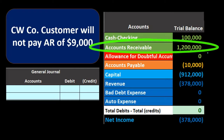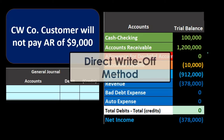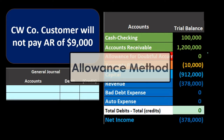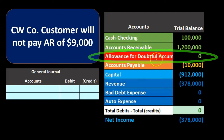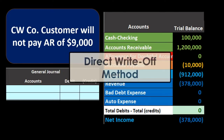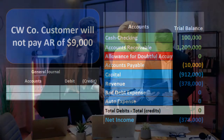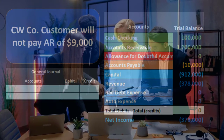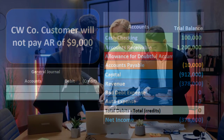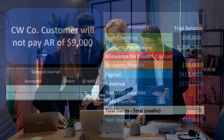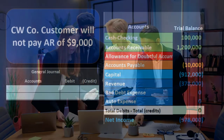As we go through the direct write-off method, we'll always compare it to the allowance method to see the differences. There is a red account shown here that will not be used as we go through the direct write-off method, but it is there to show what would be present under the allowance method, to compare and contrast as we go through this process.